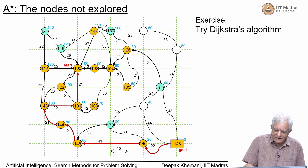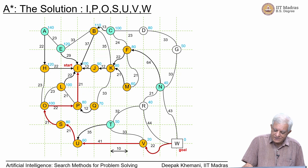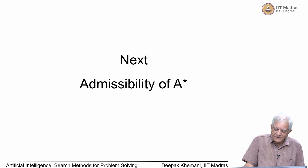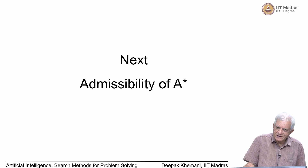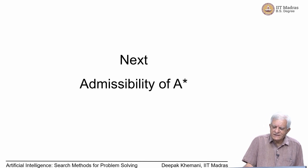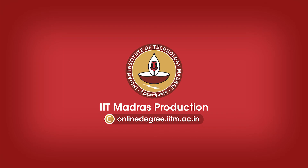In this example, A* has found the optimal path. The solution starts with node I, goes to node P, then node O, and so on until reaching the goal node. Next we will discuss whether A* always finds an optimal path — this will give us the conditions under which A* is admissible, meaning it guarantees an optimal path. We will cover that in the next slide.